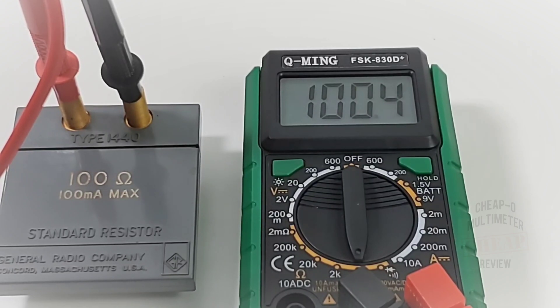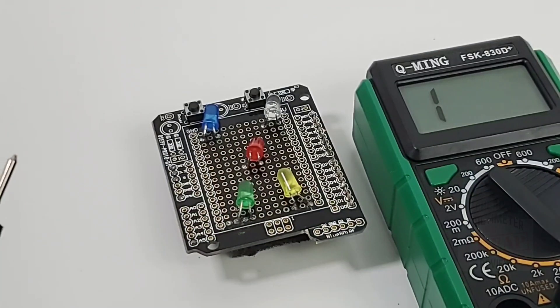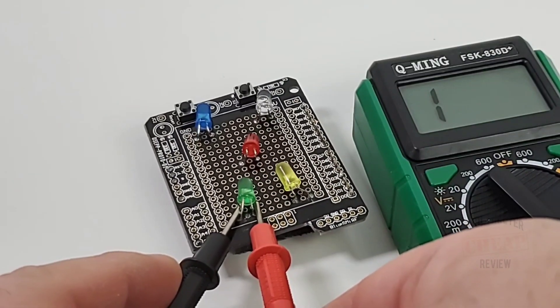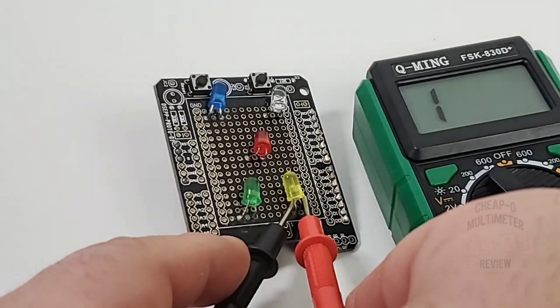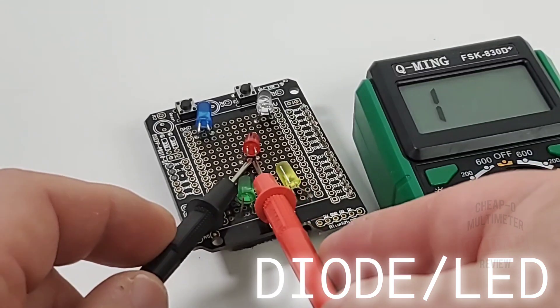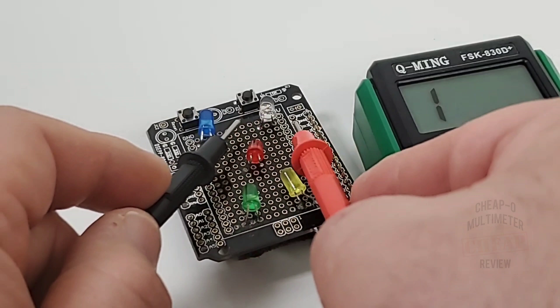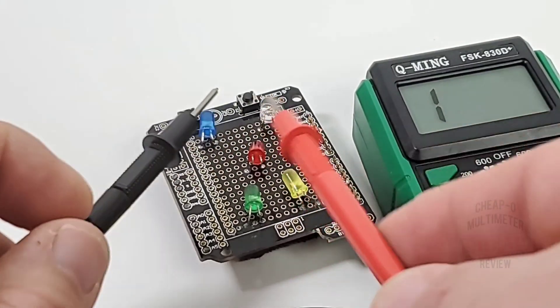Looking at that lab resistor, 100 ohm is what we want. If we take off that four we're pretty well spot on. Good stuff, little Q-Ming, you're an accurate little cheapo. Okay, LED time. Here we go. I don't have a whole lot of confidence but nothing there on the green, on the yellow it is lit.